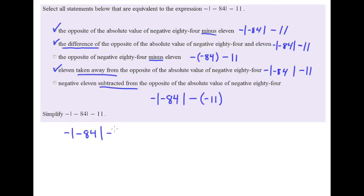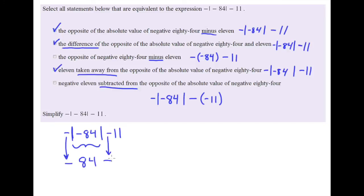One really important note: when you have the opposite of negative 84 in parentheses, that becomes 84, because the opposite of negative 84 is 84. But please do not try a similar simplification when you have absolute value bars. With absolute value bars you must take the absolute value of the number before applying any negatives. So I take the absolute value of negative 84, which is 84, then bring down the negative outside, the minus sign, and the 11.